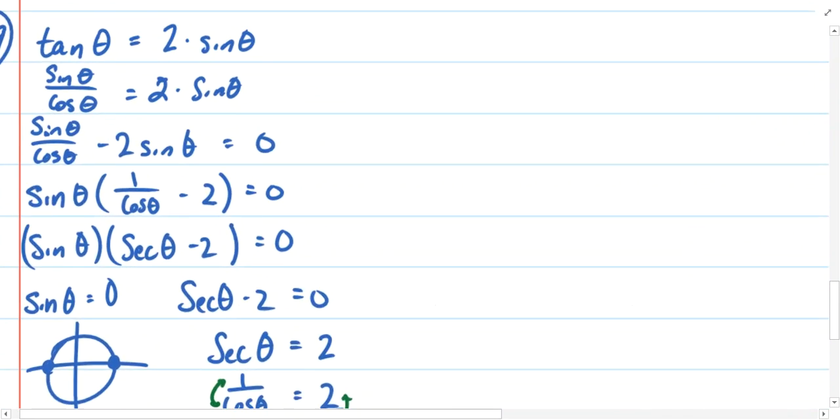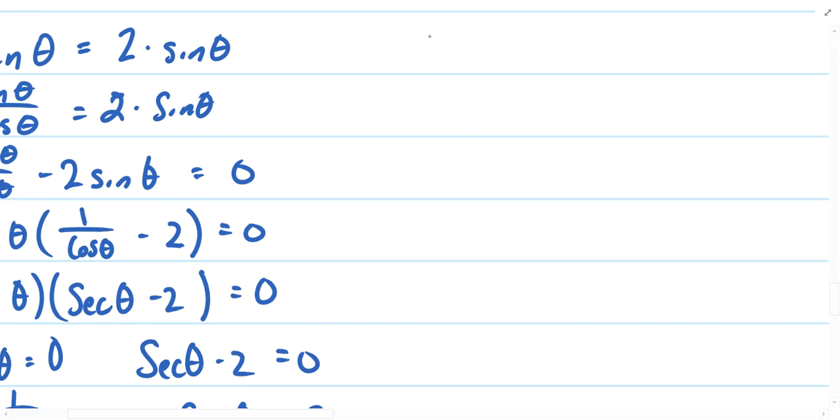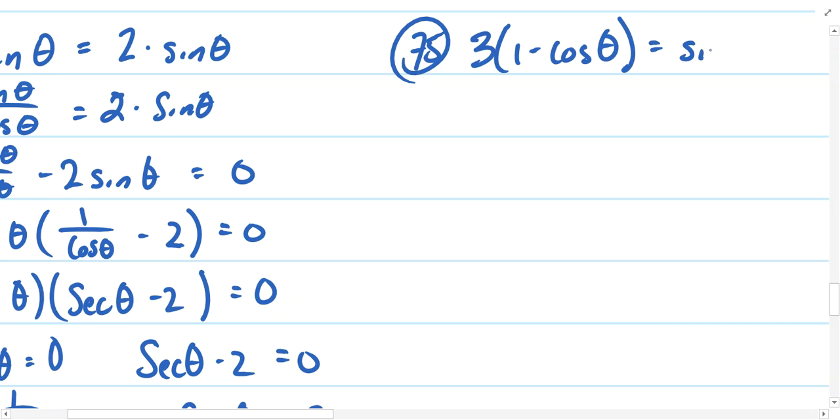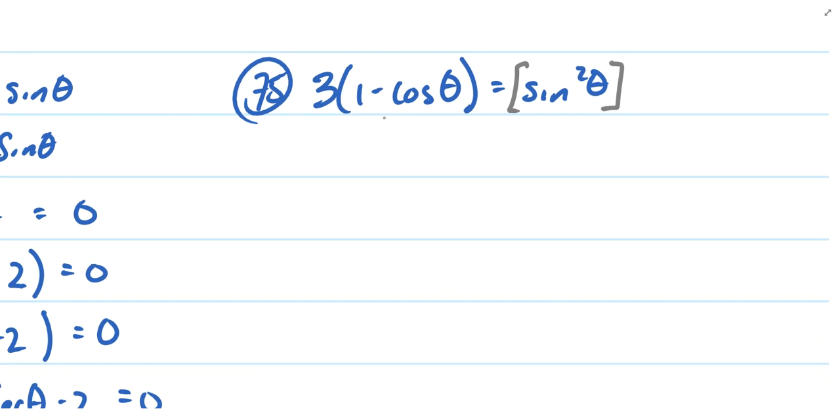The last example I'd like to walk through is number 75. Something interesting occurs here. On 75, we had 3 times 1 minus cosine theta equals sine squared theta. And hopefully at this point, you've seen these enough, and you might recognize that sine squared theta can be written in some form of cosine, since we already had cosine in the other part of the problem. That might be a worthy step here.